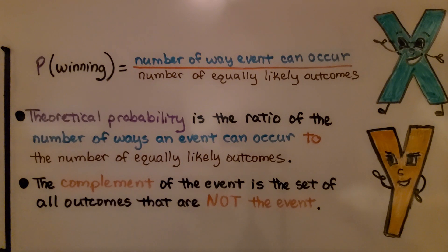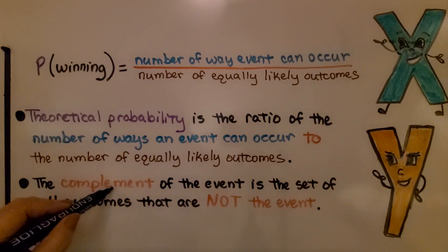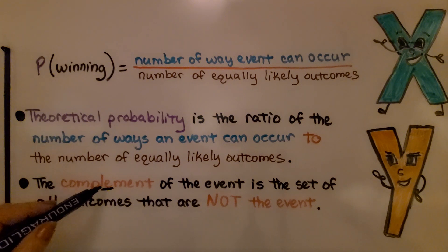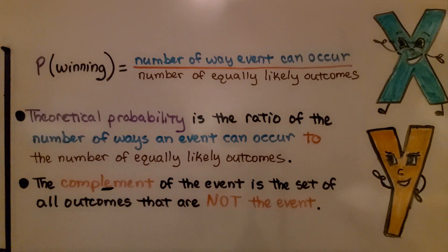And, the complement of the event is the set of all outcomes that are not the event. If winning means the arrow pointing to a gem, the complement would be not pointing to a gem section. And, I want you to notice that this word complement has an E. It doesn't have an I. If there was an I here, then that would be a compliment like, I really like your shirt. This complement is the opposite. It means not the event.